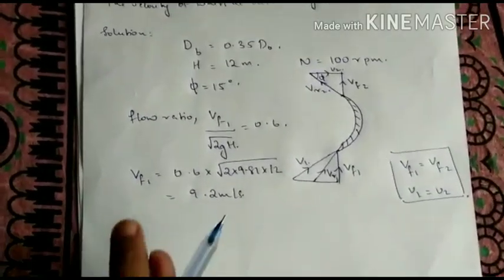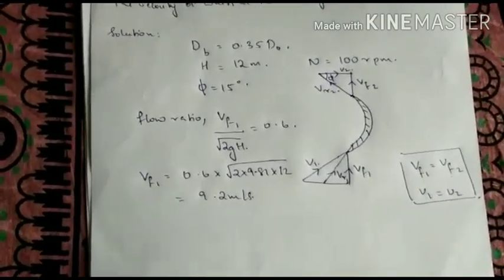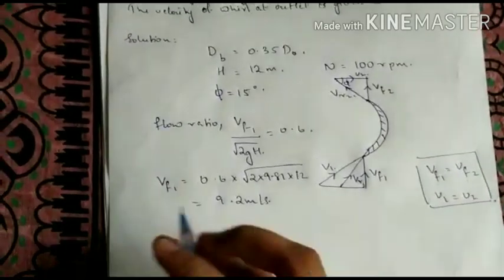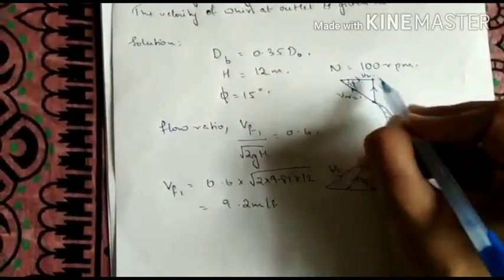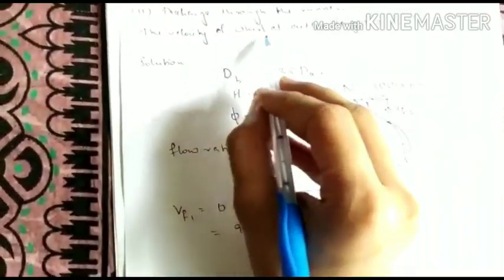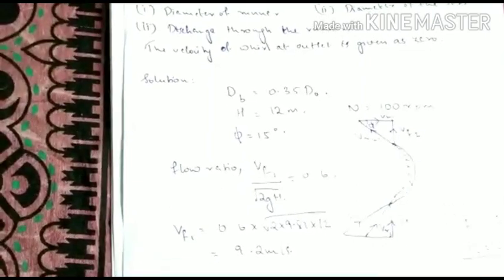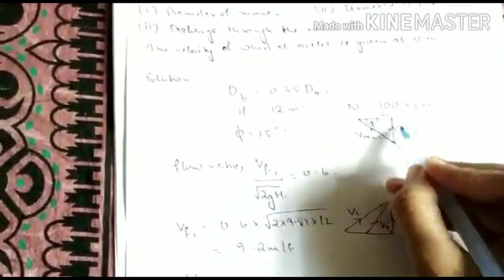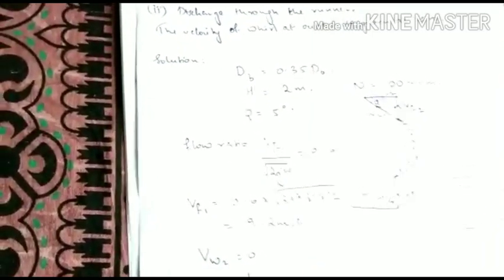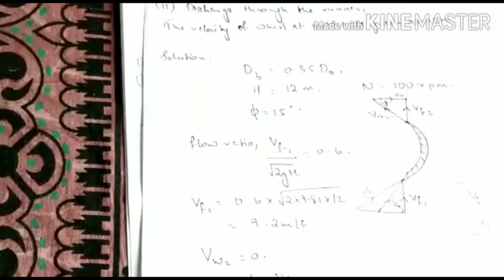So from this we already got VF2. Now let me discuss about the outlet velocity triangle. And the velocity of whirl at outlet is given as 0. So VW2 is 0. And if you consider this triangle from that you will get tan phi as VF2 by U2.